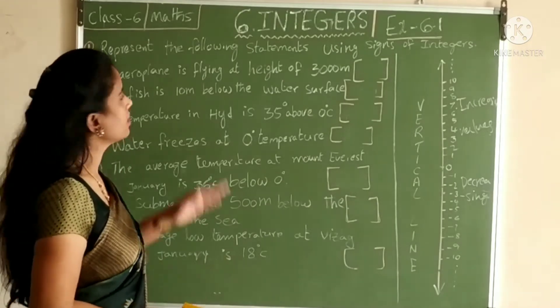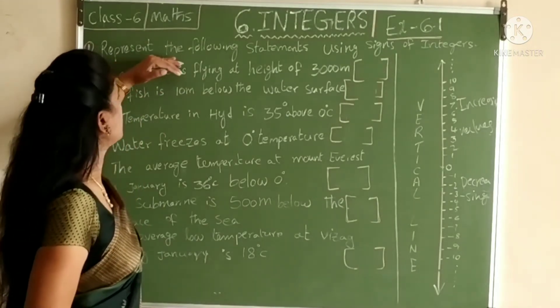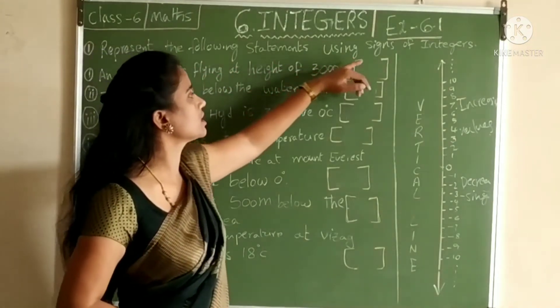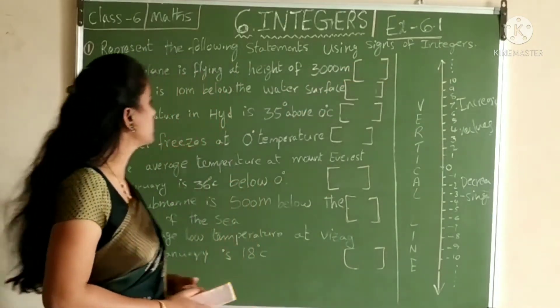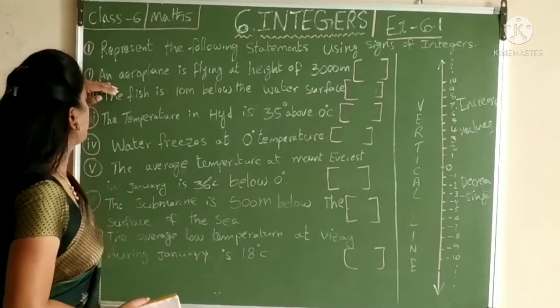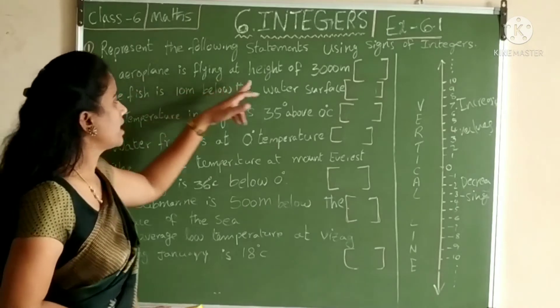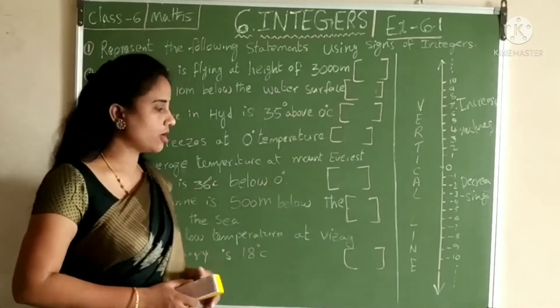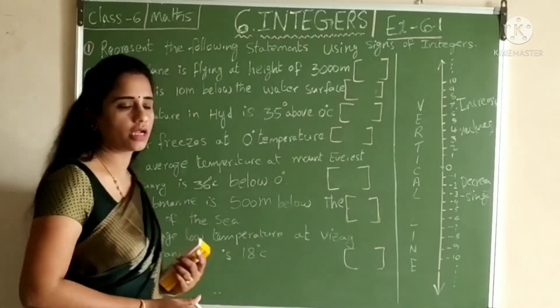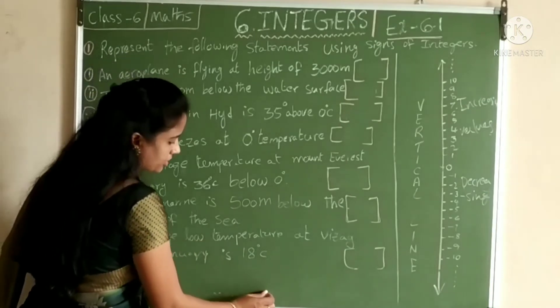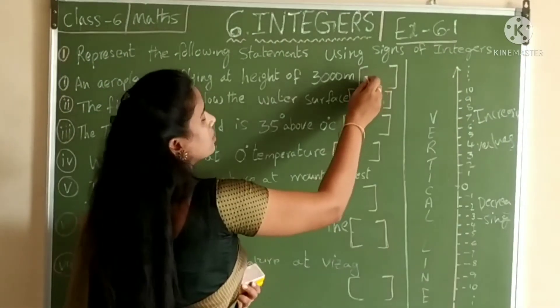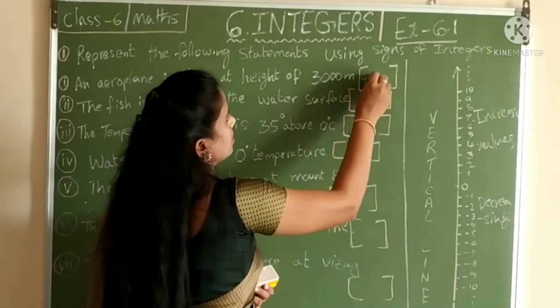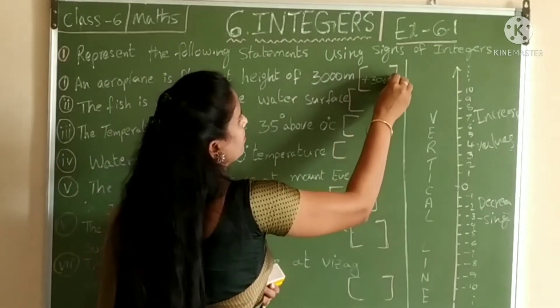Now let us see examples. Represent the following statements using signs of integers. First point: an aeroplane is flying at height of 300 meters. Aeroplane is flying at height of 300 meters means it is going up. That is plus 300 meters.